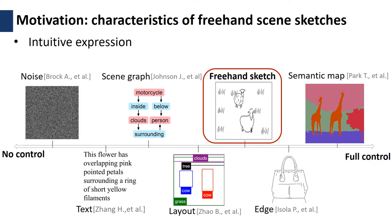It is very intuitive and flexible to convey the user's intention. More importantly, it could lessen the uncertainty by naturally providing more details such as object location, pose and shape.